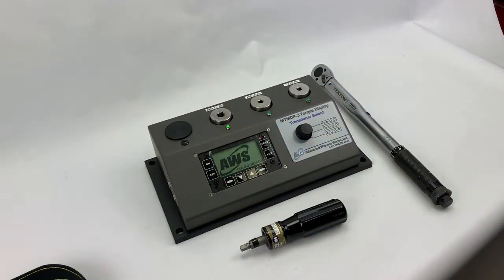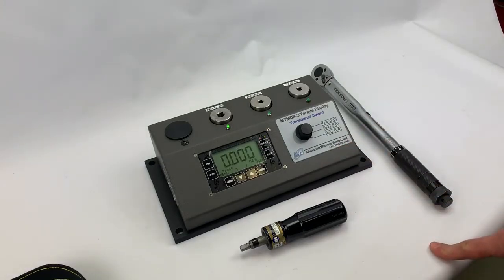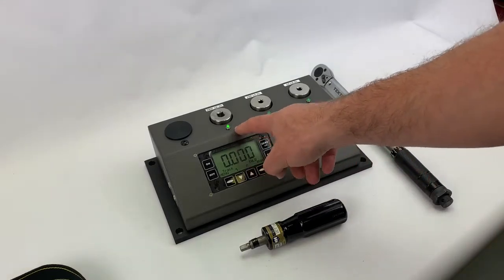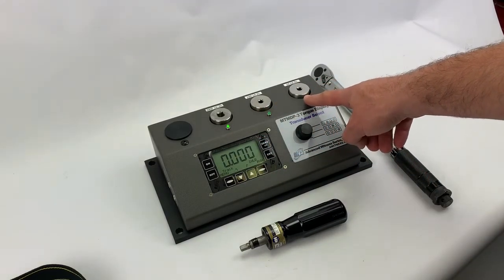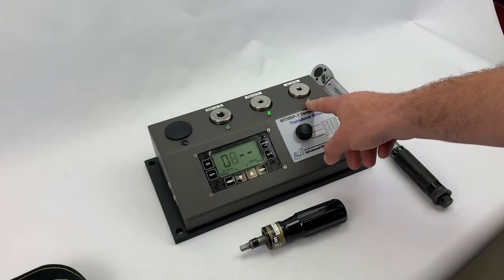You power it up. It has an internal battery or you can leave it plugged in. You then use this knob to select the transducer you want to test with. The LED indicator indicates the active transducer.